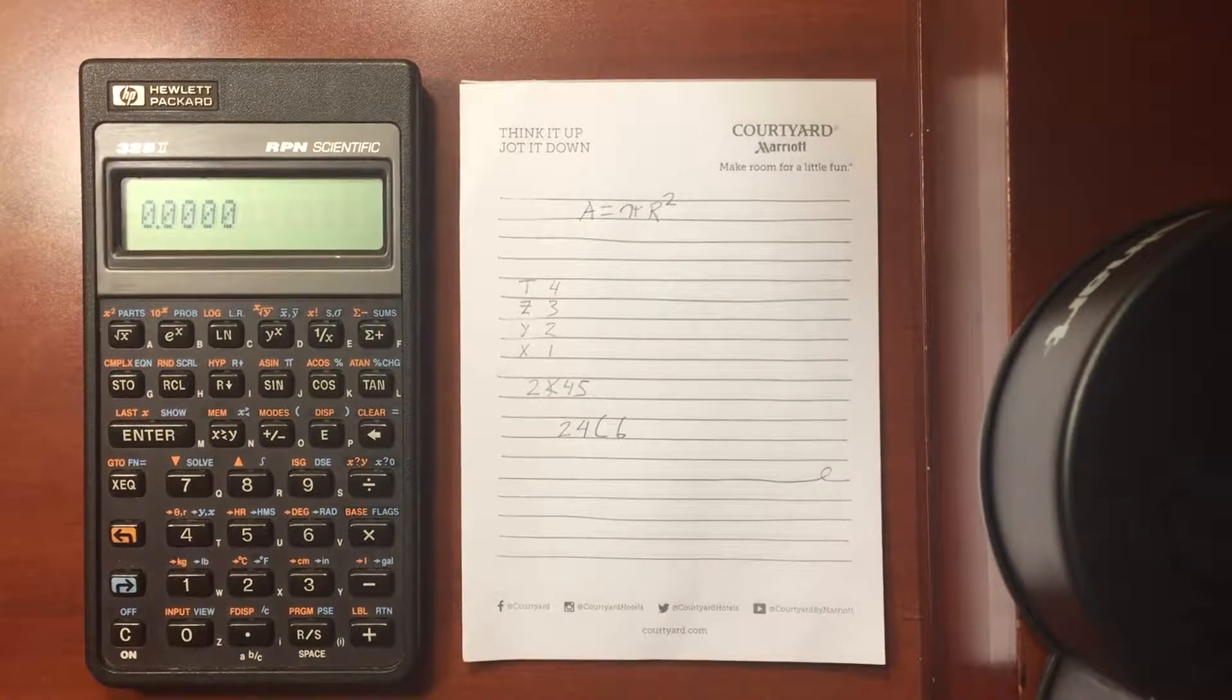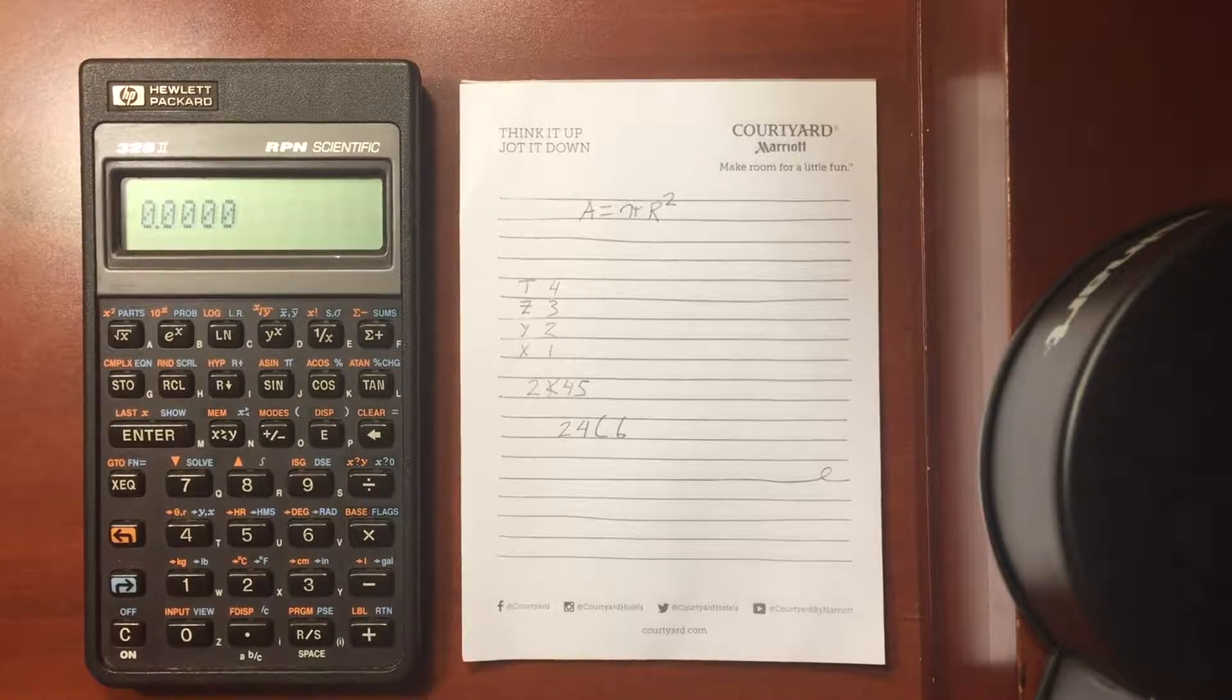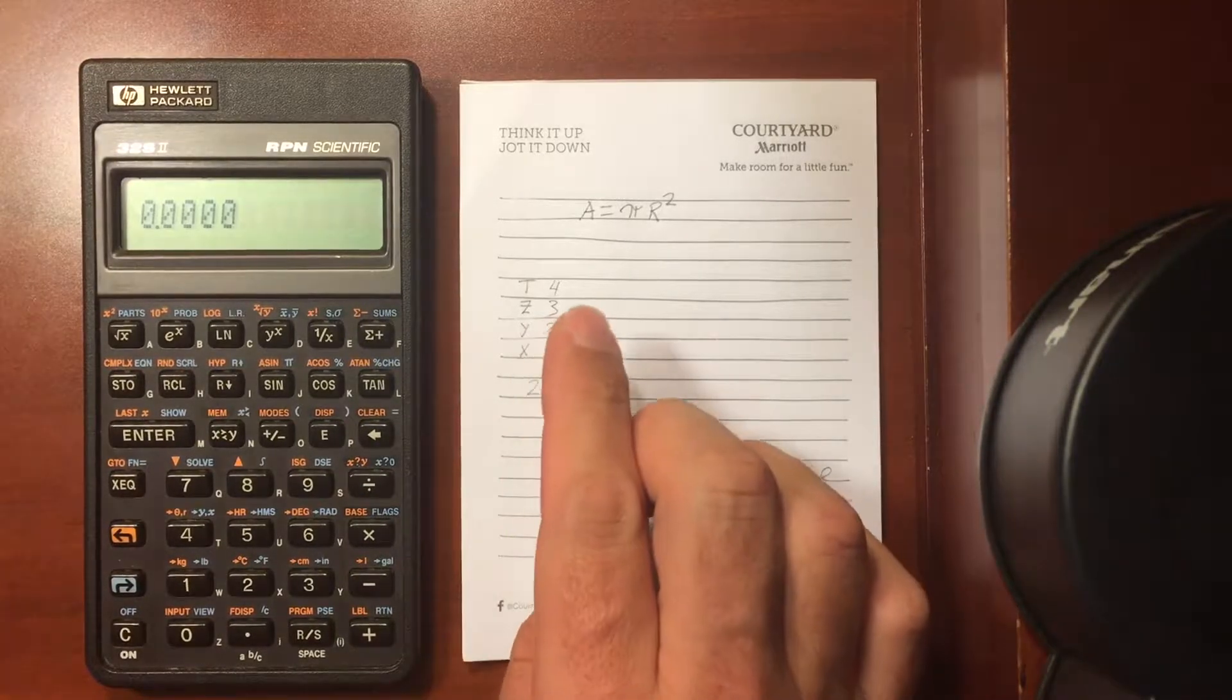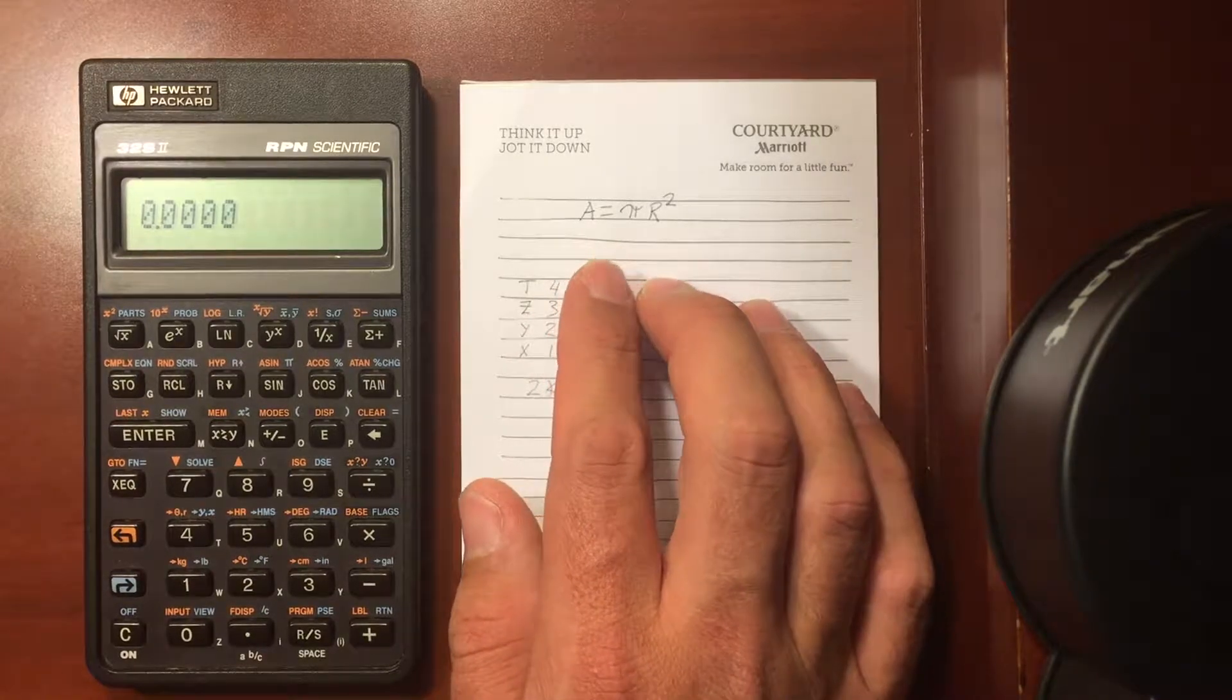Another favorite feature on the 32S2 is its ability to enter an equation and solve for it. For example, I've written an equation here: area of a circle is pi r squared.